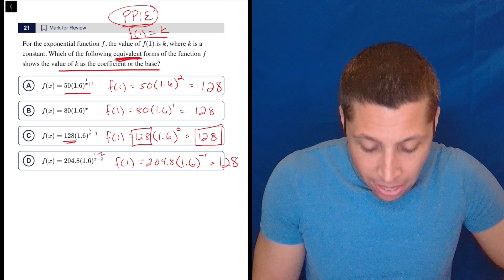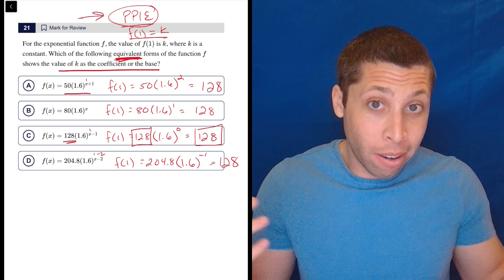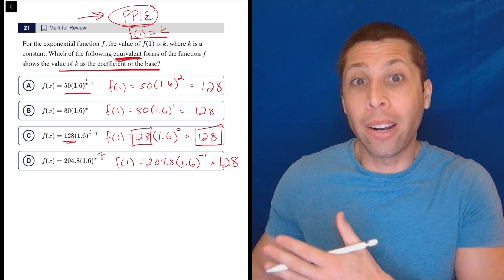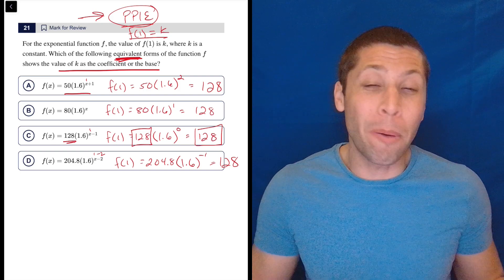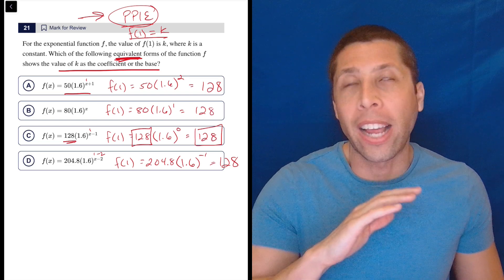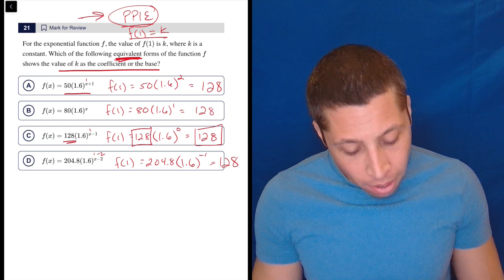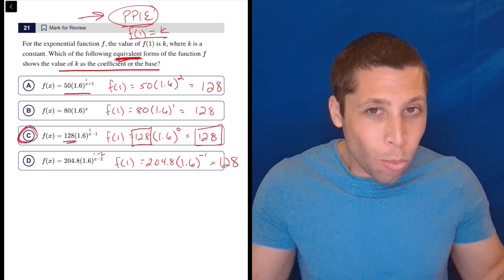So look, my hope is that if you were a mindless robot and you were like, huh, f of 1, that's like a point. And I have equations. Let me put one in for into the equations, see what happens. Even if you had no idea why that would help you or what they were asking or anything else about this, if you just mindlessly did the strategy that I never shut up about, you would figure it out because you'd be like, huh, they all gave me 128 and C has 128 in it.